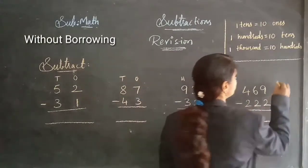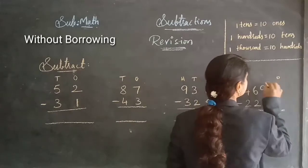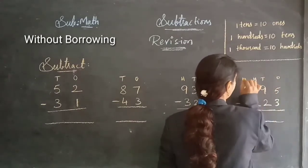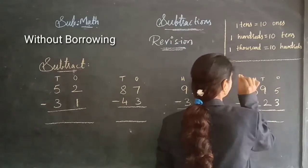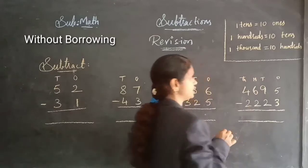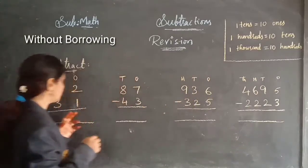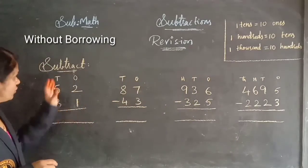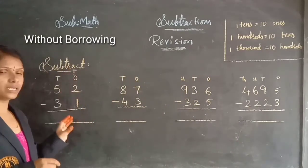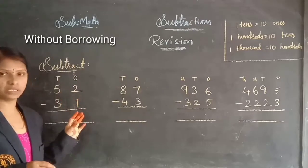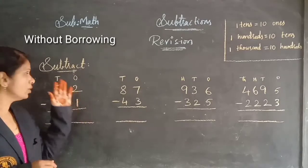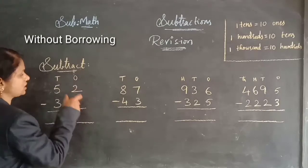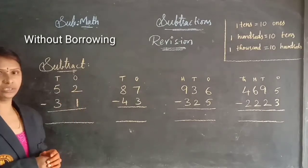And here — ones, tens, hundreds, and thousands — four places are given. Come on, first one here. Start the subtractions always from ones, children. Now, ones, tens — let's subtract here.